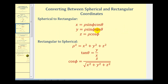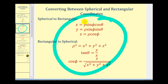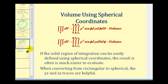We also have to be familiar with the equations used to convert between rectangular and spherical coordinates. To determine the volume of a solid using triple integrals in spherical coordinates, just as in rectangular and cylindrical coordinates, if we use the function f(x,y,z) = 1 for our integrand and the limits of integration define our solid, this triple integral gives us the volume. In spherical coordinates, dV gives us rho squared sine phi, d rho d phi d theta, or commonly expressed as d rho d theta d phi. So if the solid region can be easily defined using spherical coordinates, the result is often much easier to evaluate.